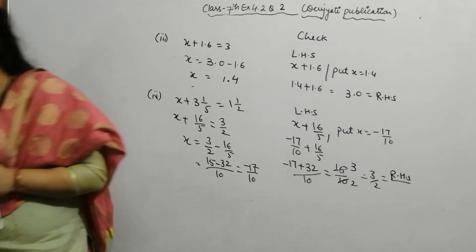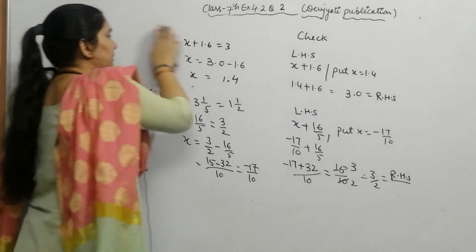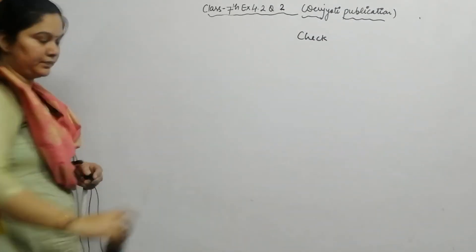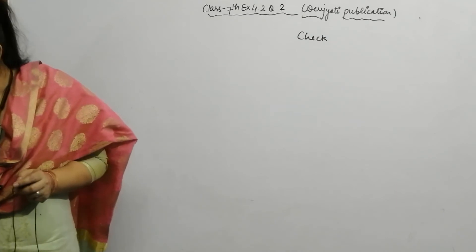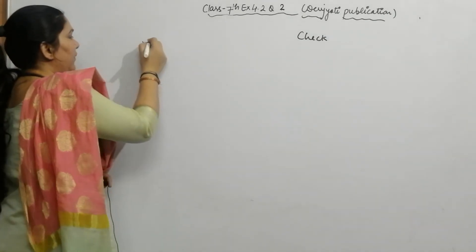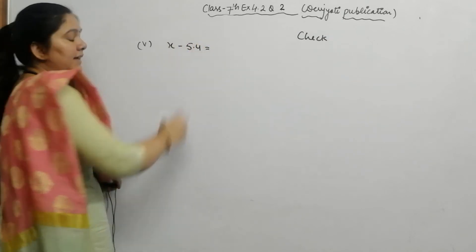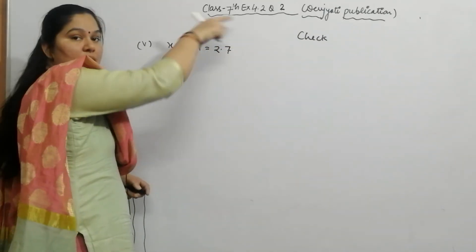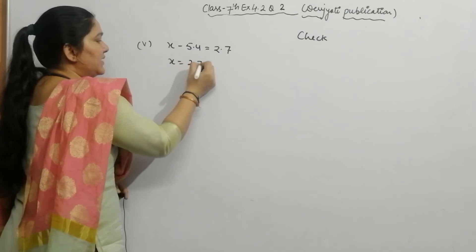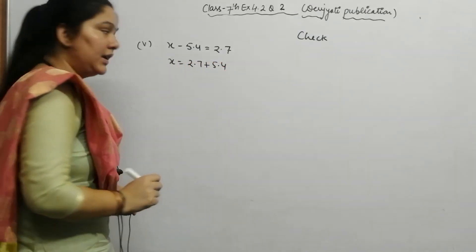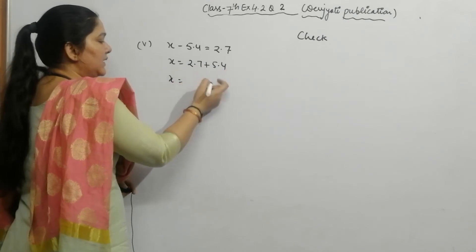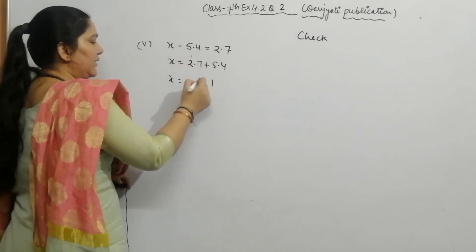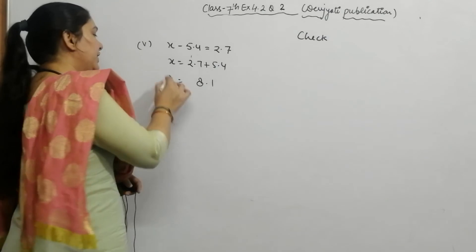Let's start Part 5. Part 5 is: x minus 5.4 is equal to 2.7. Since 5.4 is in subtraction, it moves to the right side as addition. So x equals 2.7 plus 5.4. Adding: 7 plus 4 is 11, carry 1; 2 plus 5 plus 1 is 8. So x equals 8.1.